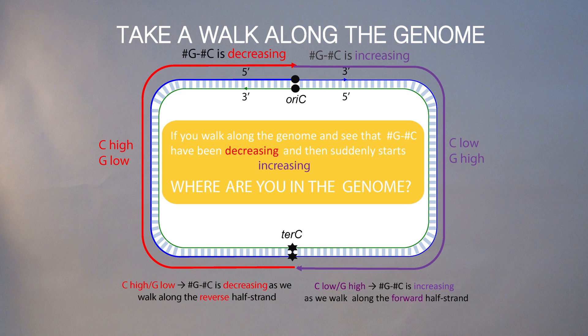To figure out where in the genome you are, we need once again to look at peculiar statistics. The only place in the genome where the behavior of G minus C switches from decreasing to increasing is the origin of replication. Which means that if you walk along the genome and see that G minus C has been decreasing and then suddenly starts increasing, it means you just passed the origin of replication. And this is the hint for our algorithm.